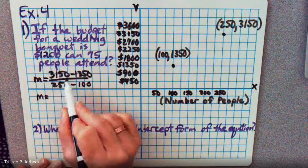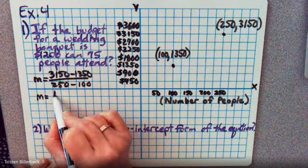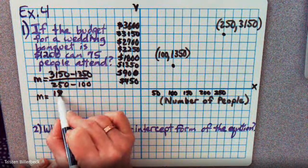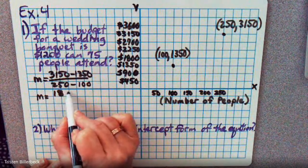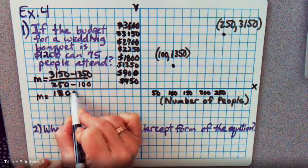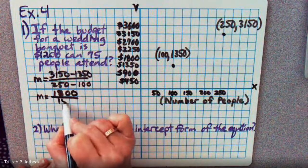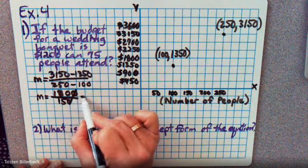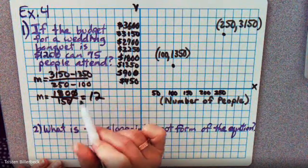So let's see, that gives us 1800 over 150. So that gives me a slope of 12.